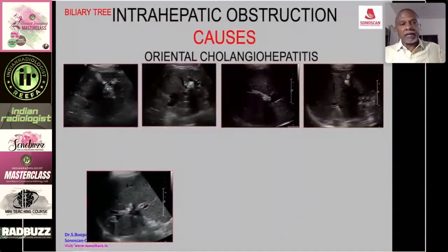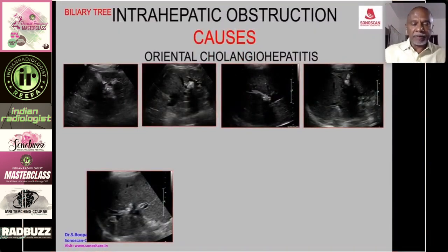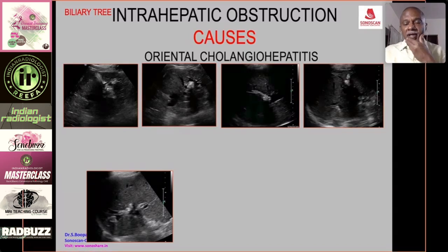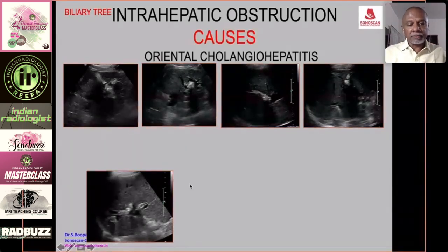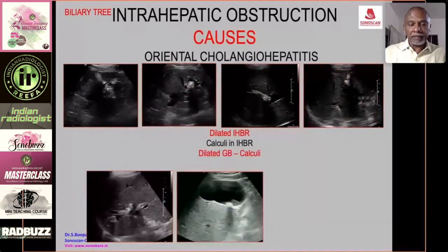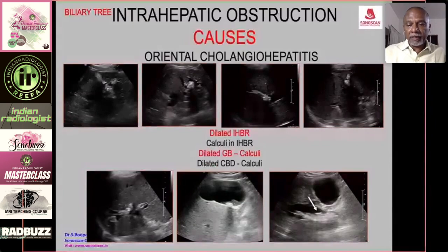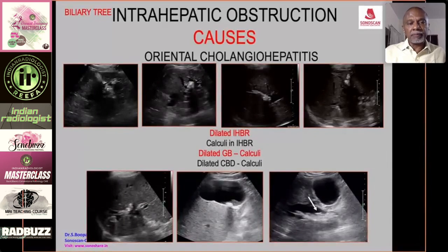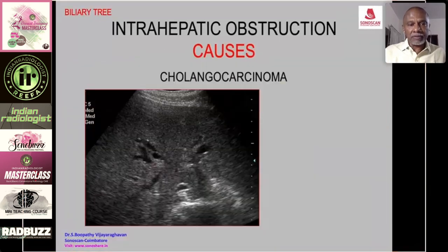Oriental cholangiohepatitis is a disease of recurrent cholangitis resulting in multiple strictures, causing obstruction and dilated biliary tree. There may be multiple calculi in the intrahepatic bile ducts, seen in the periphery of the liver, along with calculi in the dilated gallbladder and also in the dilated common duct — this is the typical appearance of oriental cholangiohepatitis.